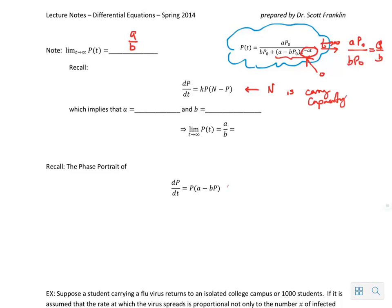In this model right here, if you distribute the k, you end up with p is k n minus k p, and so your a is k n, and your b is just k.